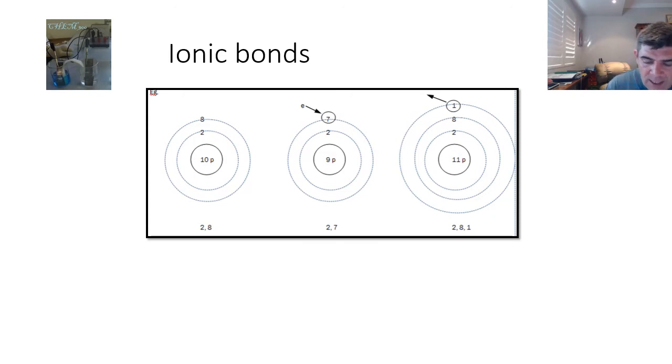So here is the element neon. It has 10 protons in its nucleus and it has 2 electrons in the first shell and 8 in the second shell. Now I haven't broken this down into the subshells, but the Bohr model explains this bonding behavior well enough.